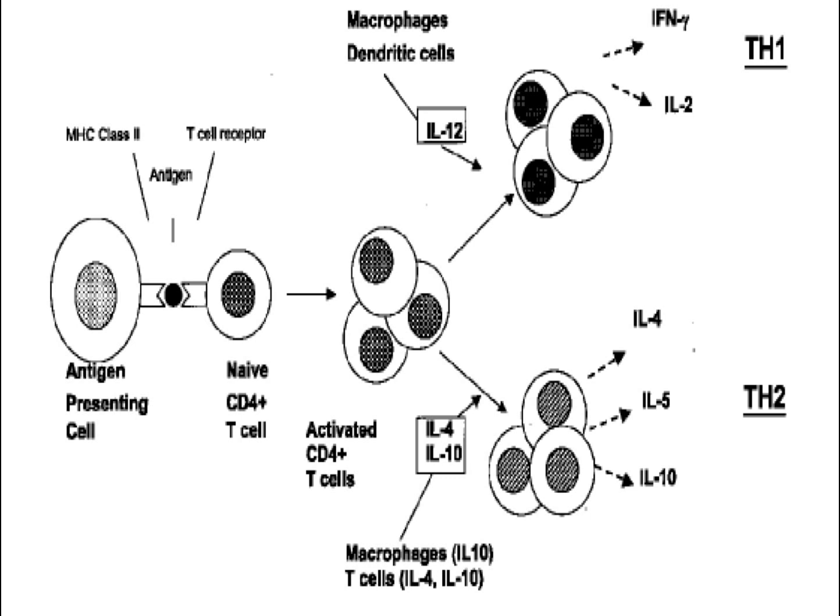The genes included are interleukin 4, 5, 6, 10, interferon gamma, tumor necrosis factor, and many others. The ones required for TH2 include interleukin 4, 5, and 10. Interleukin 4 will inhibit formation of TH1, while interferon gamma — if the roles were opposite — would inhibit TH2 formation.